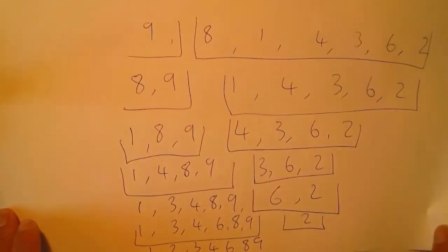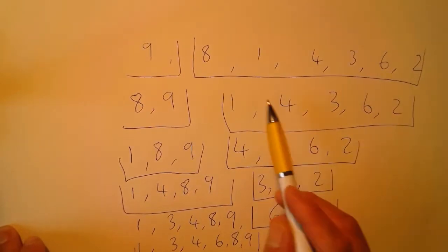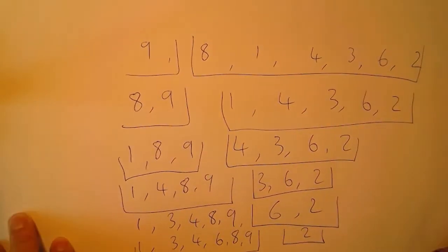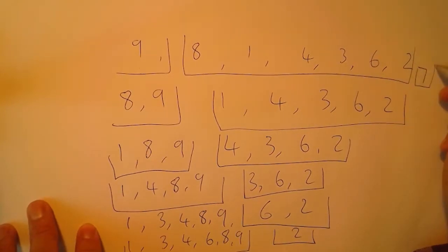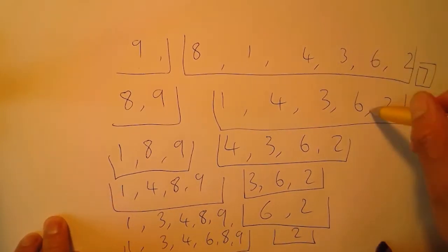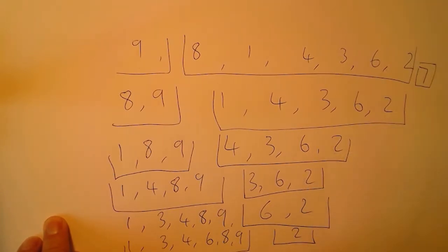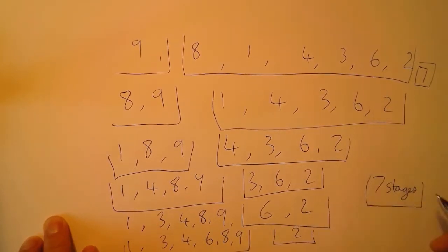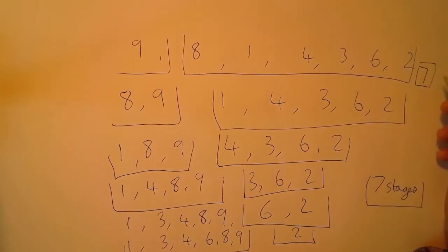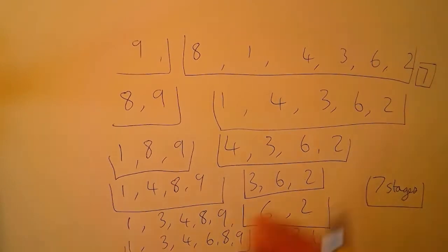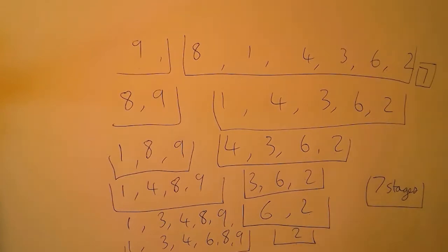Each time, every element has to be compared to the sorted array and inserted in the correct place. With seven numbers here, that means we've got seven stages. On average, however many items you have in your data set, that's generally how many passes it's going to take to sort the data.